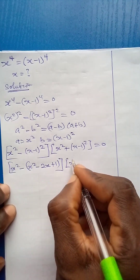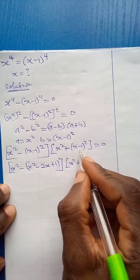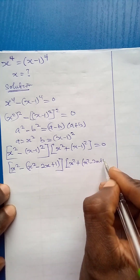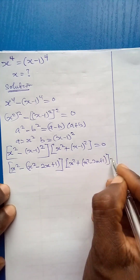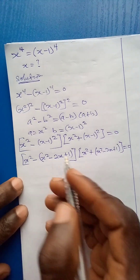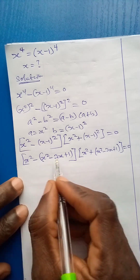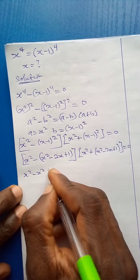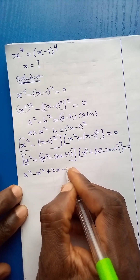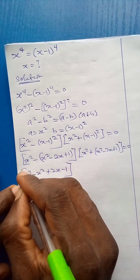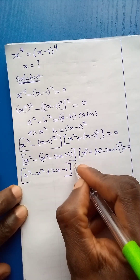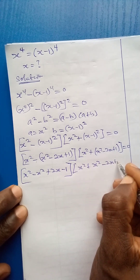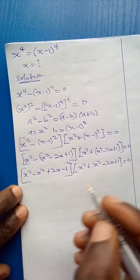The second bracket is x squared plus x squared minus 2x plus 1, equal to 0. Opening the first inner bracket with the minus sign gives x squared minus x squared plus 2x minus 1. Opening the second gives x squared plus x squared minus 2x plus 1, equal to 0.